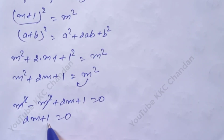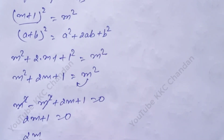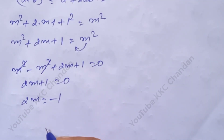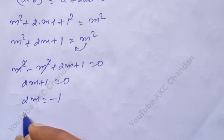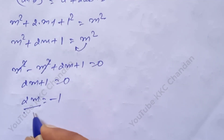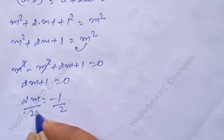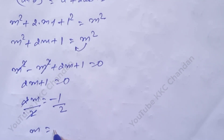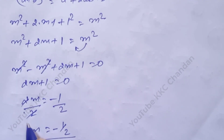After this, the 1 comes to this side in negative form: 2m is equal to minus 1. Then both sides are divided by 2. The 2s cancel, giving m is equal to minus 1 divided by 2. This is the final value of m.